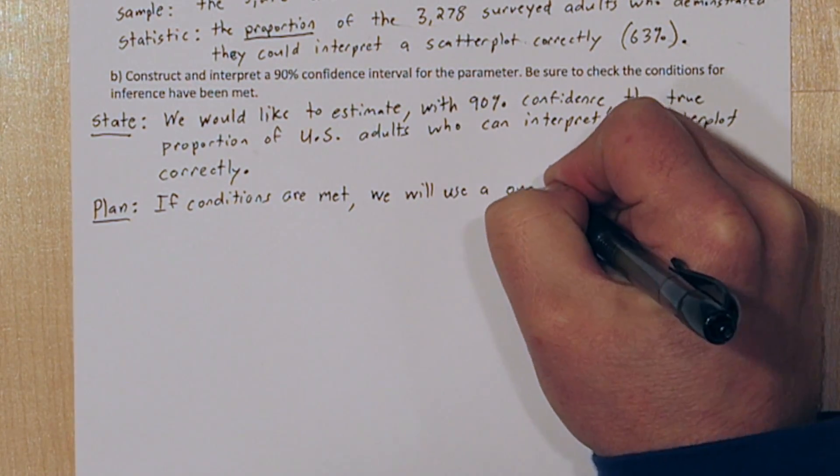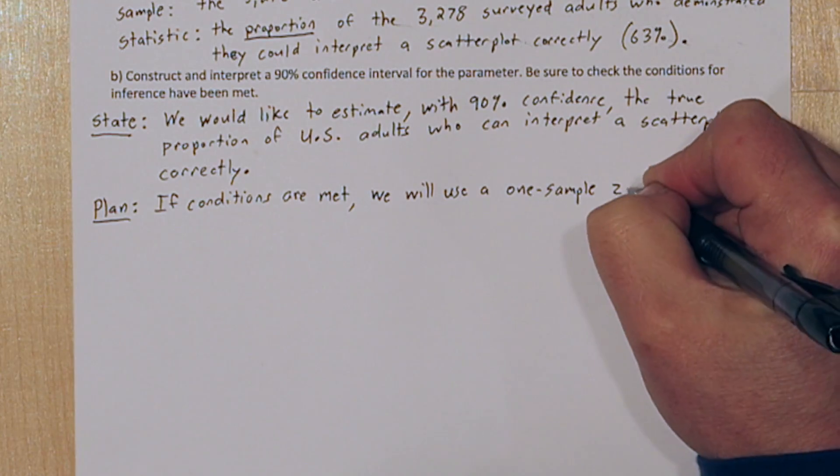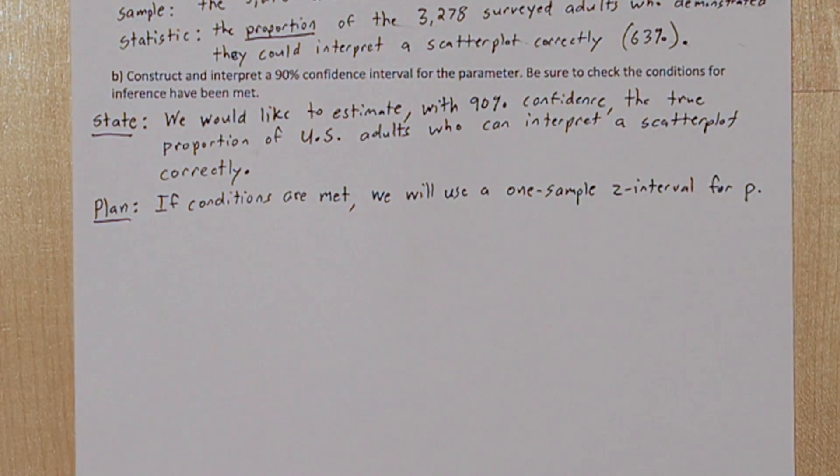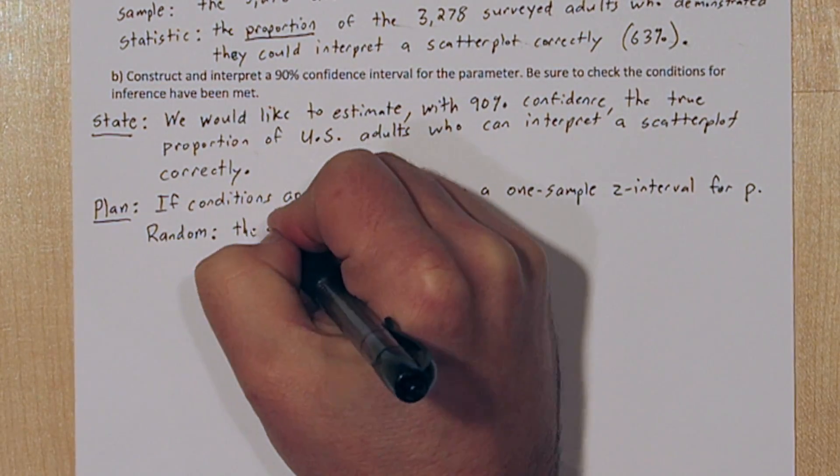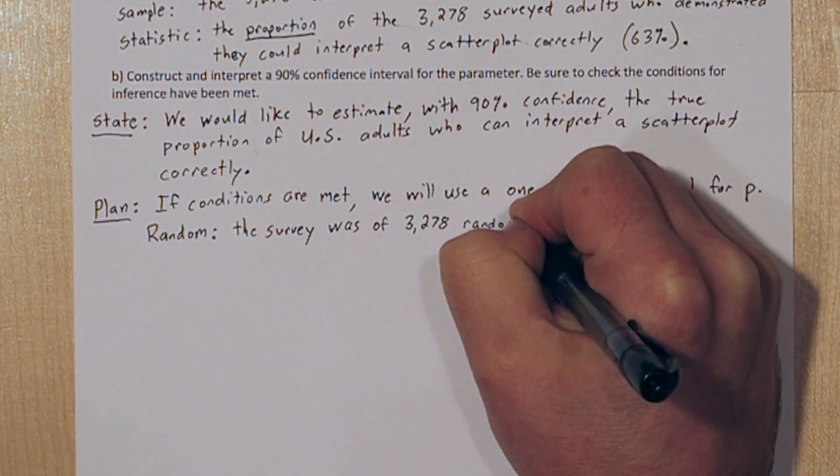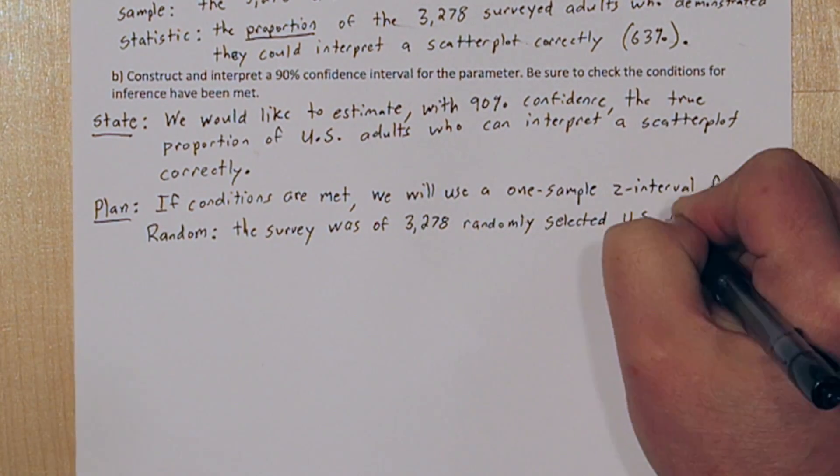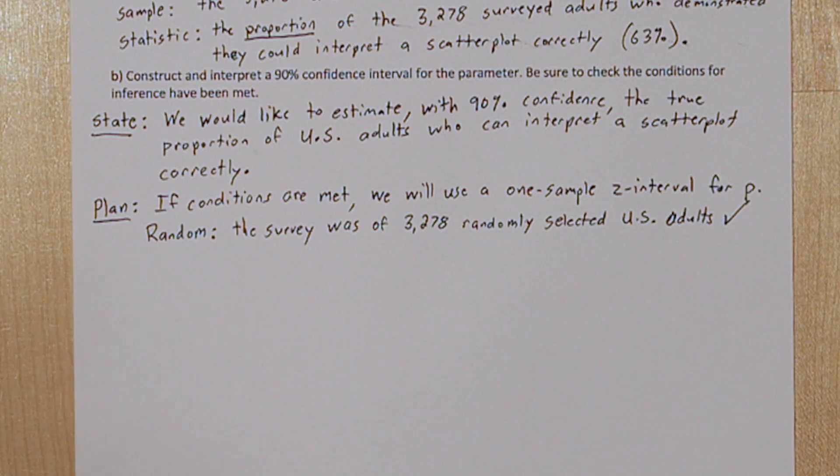If conditions are met we will use a one sample Z interval for P. That's our inference method. It says in the stem of the problem that the survey was of randomly selected U.S. adults. So that conditions met.